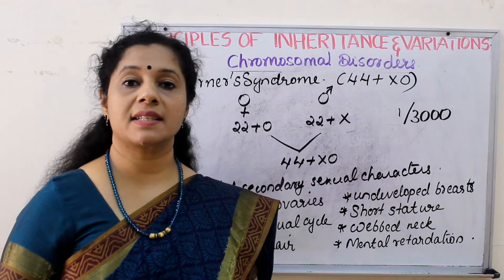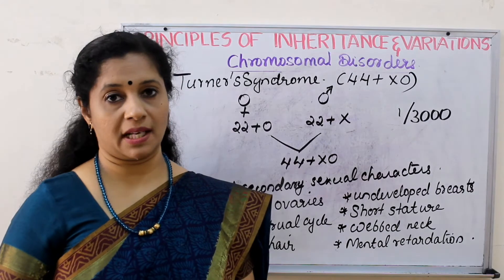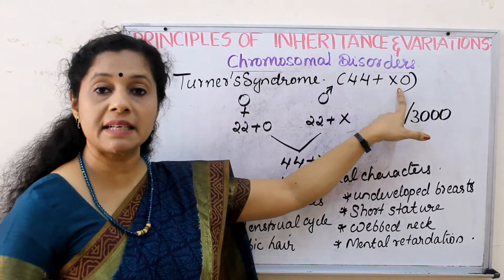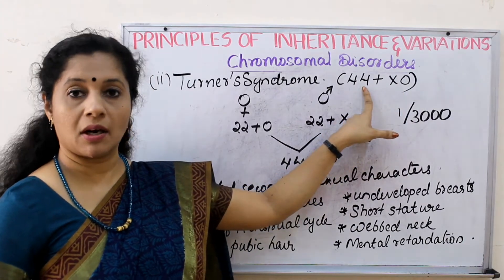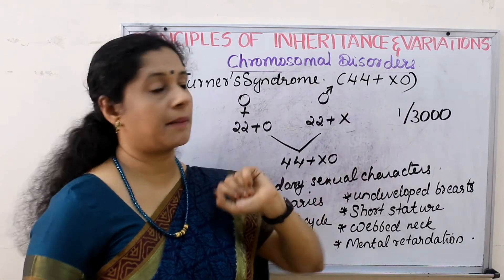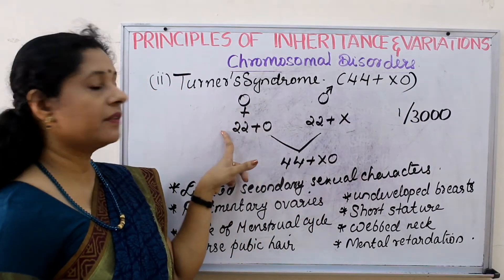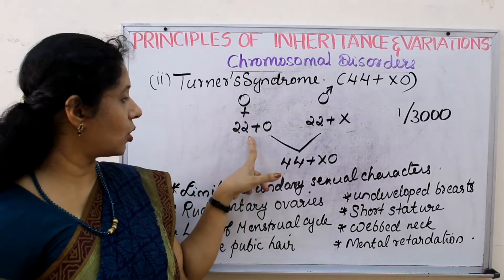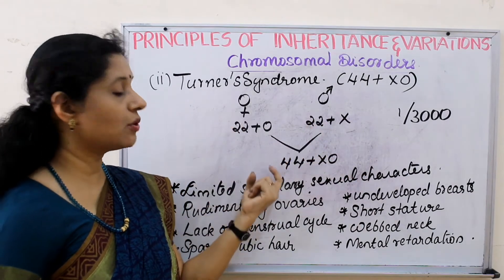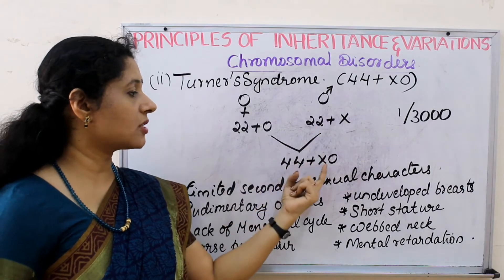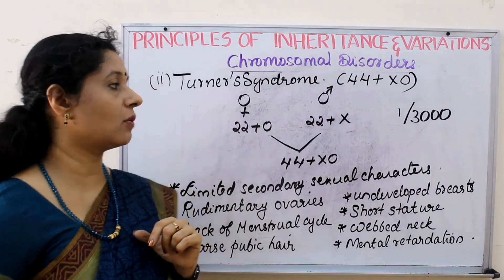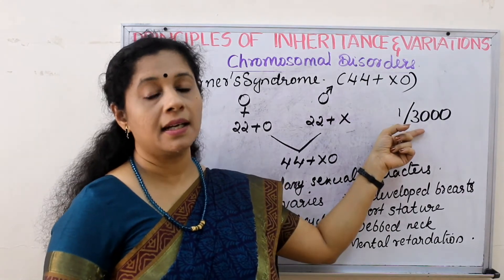The next disorder we are discussing is Turner syndrome. It is a sex chromosomal abnormality — it is aneuploidy, specifically a monosomic condition, meaning one chromosome is missing from a female. Usually females have 44 autosomes plus one pair of X chromosomes. But here one X is missing. It is caused by the fusion of a female gamete or ovum without an X chromosome — only 22 autosomes — and a gynosperm from the male with an X chromosome. So 44 autosomes are there but one X chromosome is missing. Genetically it is a female because of the presence of X and the lack of Y chromosome. 1 in 3000 female births may result in Turner syndrome.